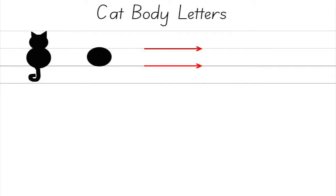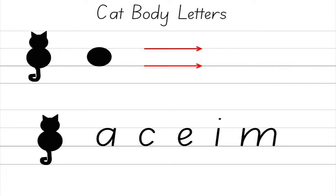Cat body letters are the most common letters that sit between the two main lines, like A, C, E, I, M, N, O, R, S, U, V, W, X, and Z.